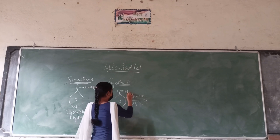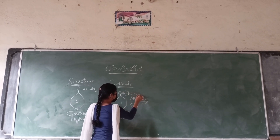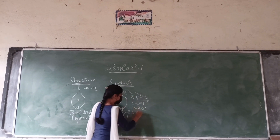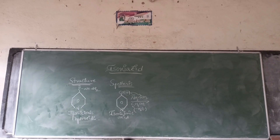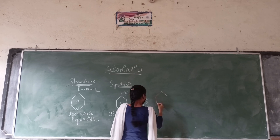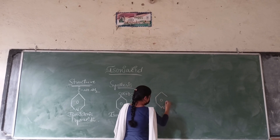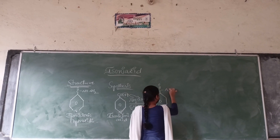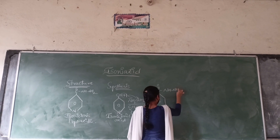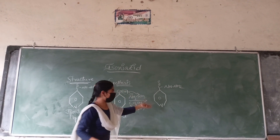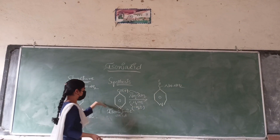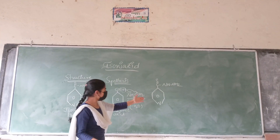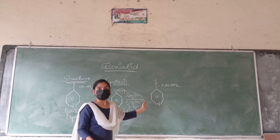What happens is, this OH molecule will be replaced by hydrazine, and removal of a water molecule will take place. Hence, the product will be isoniazid — the O is replaced with NH-NH2. So it is very simple: first we take isonicotinic acid, treat it with hydrazine in presence of ethyl alcohol, then isoniazid is formed. This is all about the synthesis.